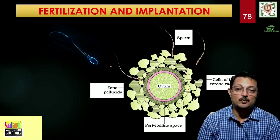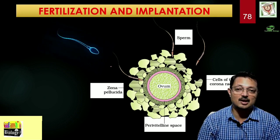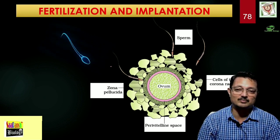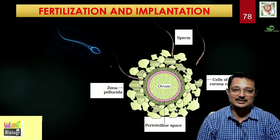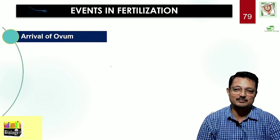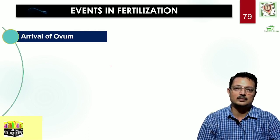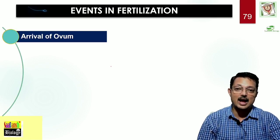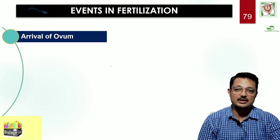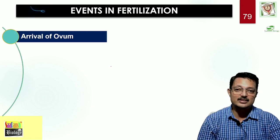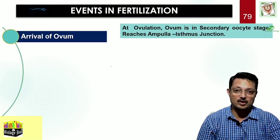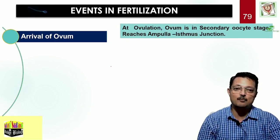It is wonderful — we are born out of a fierce competition among a lot of sperms, and only one manages to fertilize the ovum. There are discrete steps in that. First, the arrival of ovum. The ampullary-isthmic junction is the place where sperm and ovum must meet to facilitate fertilization. The ovum, at secondary oocyte stage, reaches the ampullary junction.